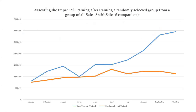Assessing the impact of training after randomly selecting a group from sales staff — you can see Team B not trained and Team A trained. Starting from July, after training in January and measuring sales volume, the average for trained people versus untrained shows a huge gap as we go forward. If someone goes to the board and requests $30,000 to train all 60 sales staff in this same methodology, they'll get support immediately — there is no board that will not support this kind of evidence.